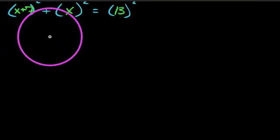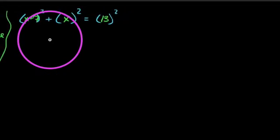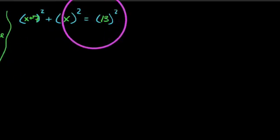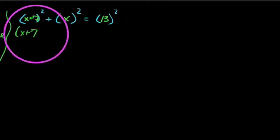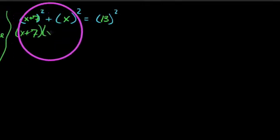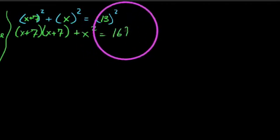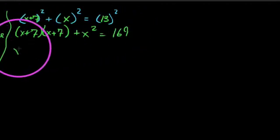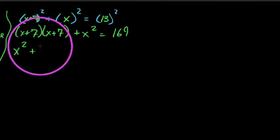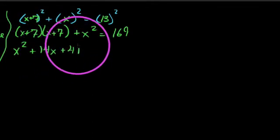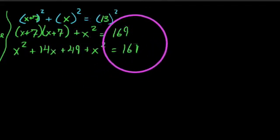So X plus 7 quantity squared literally means we're going to have to foil out the X plus 7. So let's go ahead and zoom out a little bit here. X plus 7 times X plus 7, we'll foil that bad boy out, plus the X squared that we have there is equal to 169. And if we foil this out, we get X squared plus 7X plus 7X, so plus 14X, and it'll be plus 49. Plus the X squared we already have is 169.